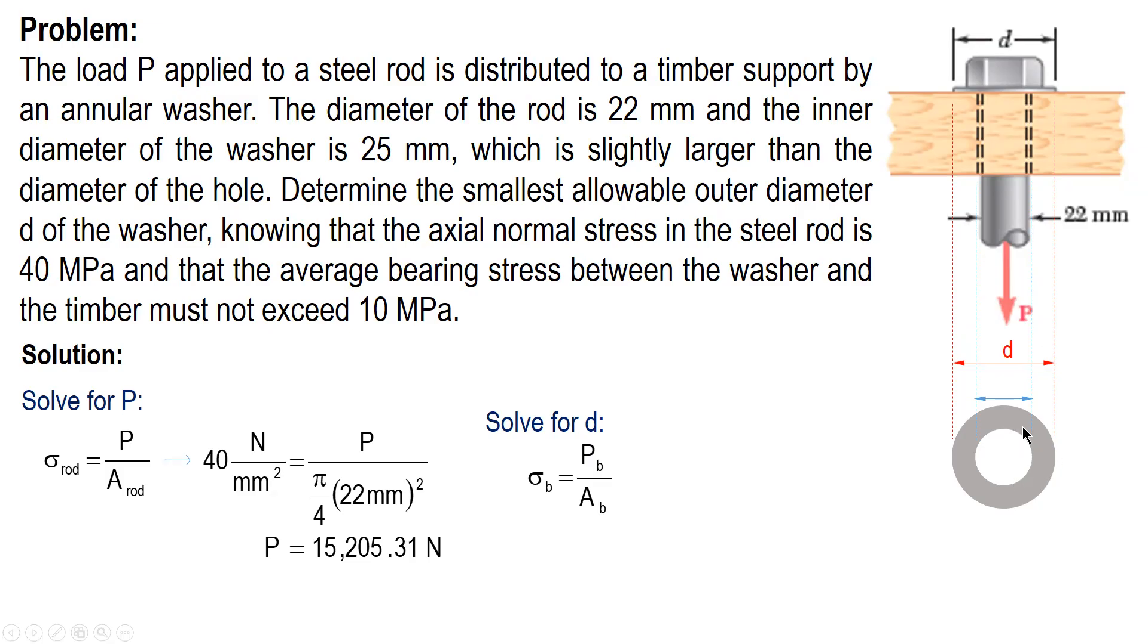Therefore, our bearing area is in an annular position: area of the bigger circle minus area of the smaller circle. Bearing stress is 10, P is given, and area is this one. And solving for this, we have D equal to 50.606 millimeters.